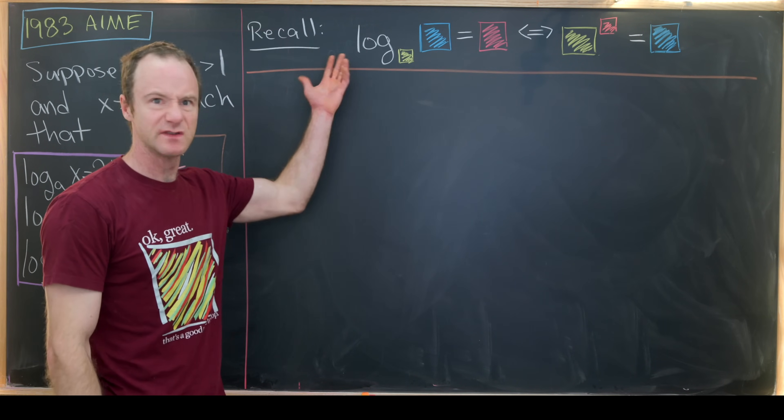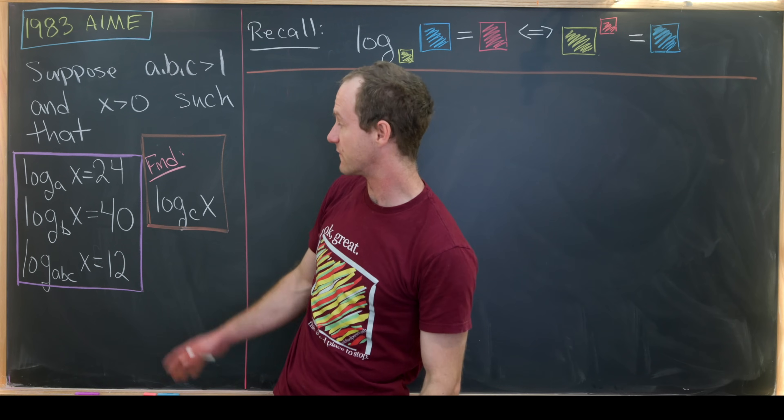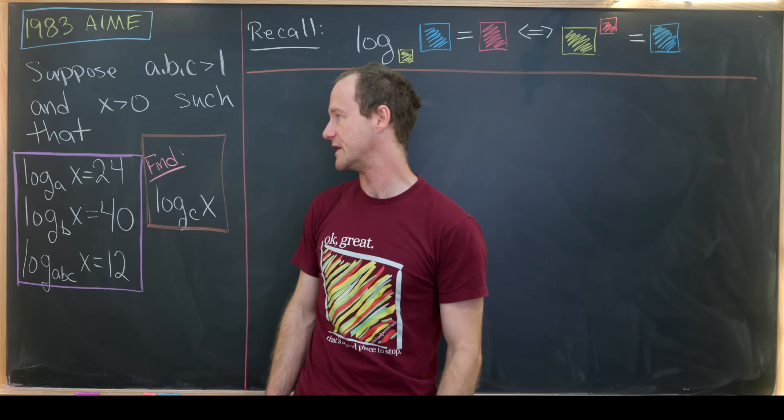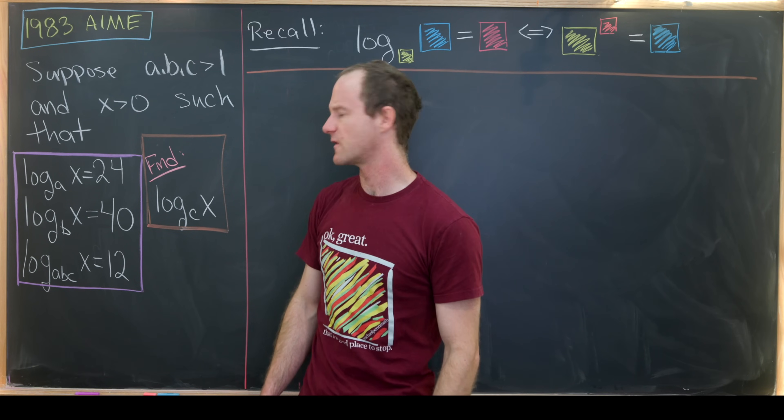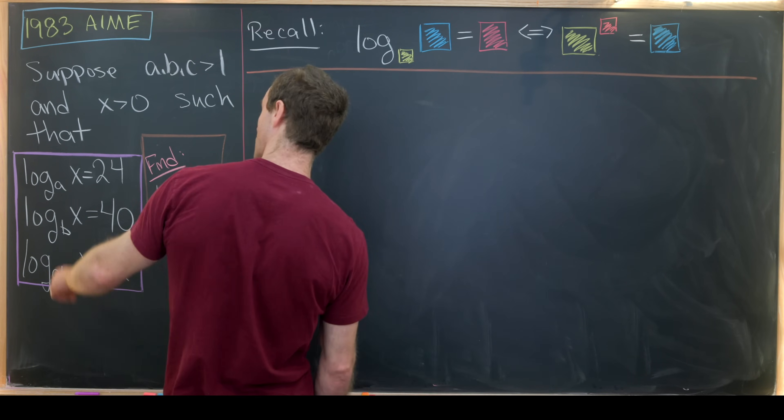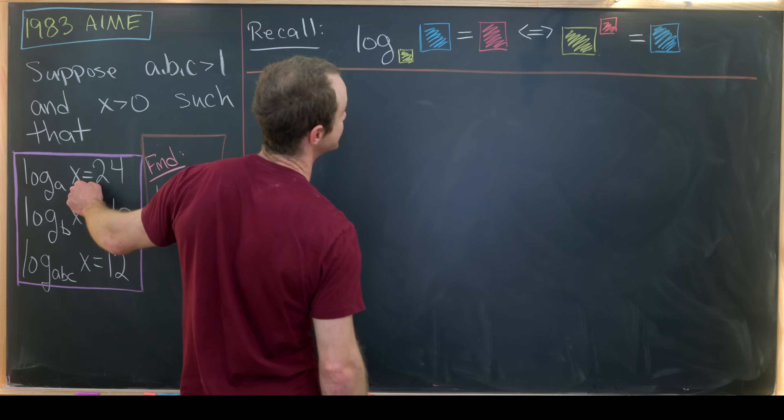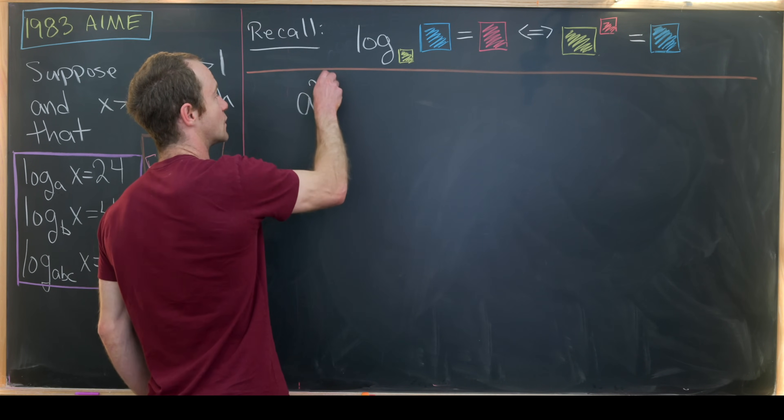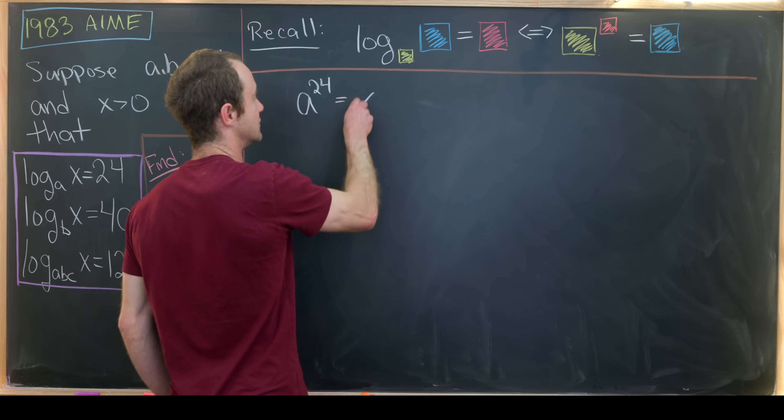Let's use this definition and fill the boxes with these parts given by these three equations. Notice this first equation is equivalent to saying that A to the 24 equals X, so we know immediately that A to the 24th power is equal to X.